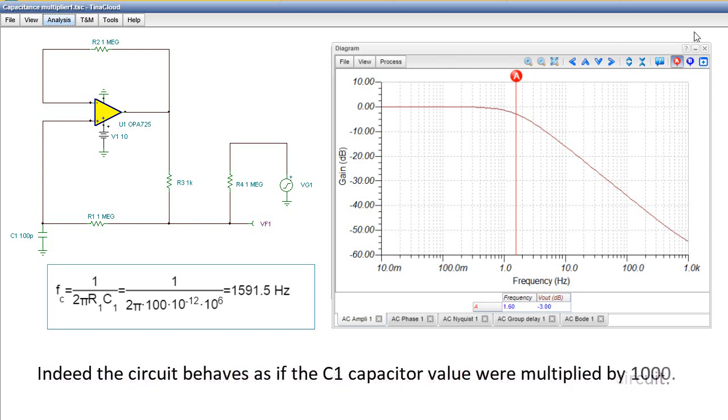Indeed, the circuit behaves as if the C1 capacitor value were multiplied by 1,000.